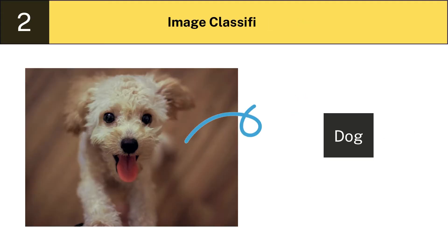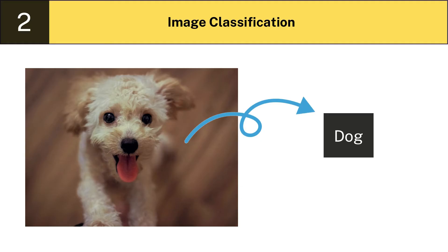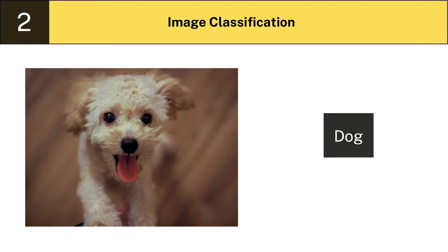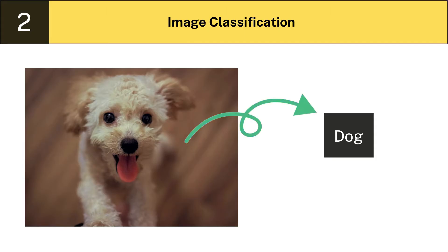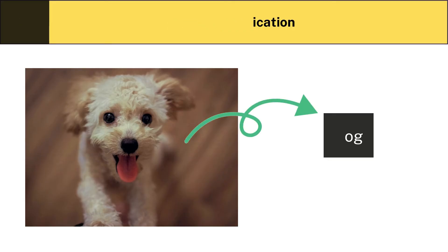Two: Image classification. Image classification is the process of associating an entire image with just one label. Feeding this annotated image data to a computer vision model would teach the model the visual characteristics unique to each type of object.